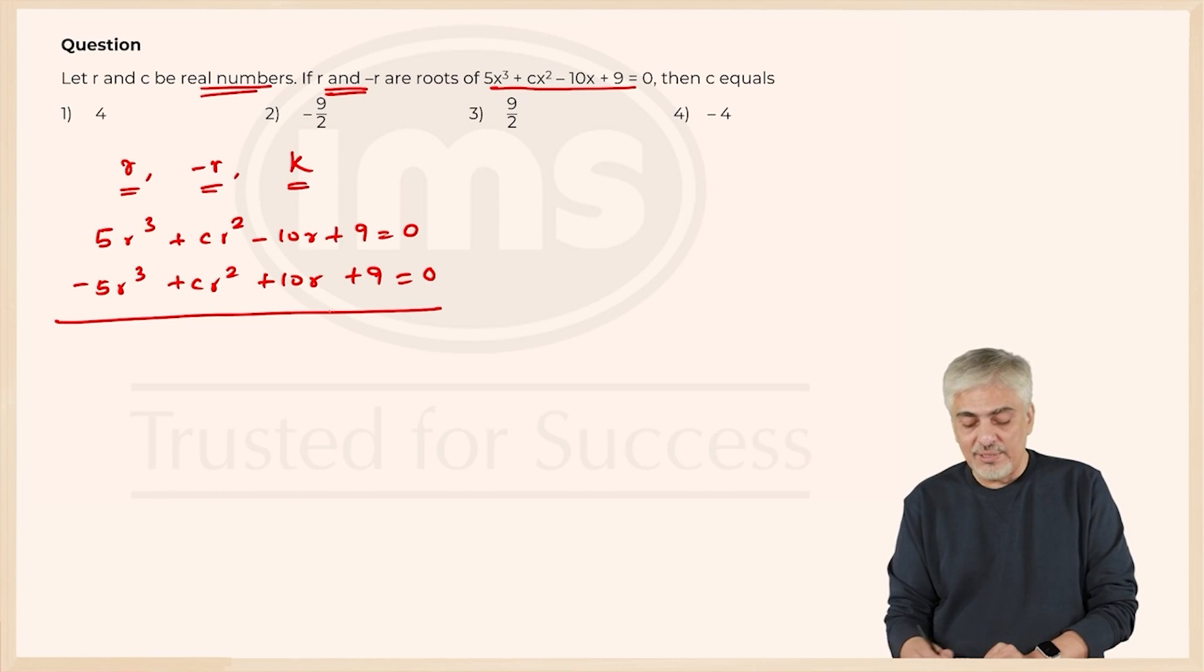So, instead of adding them, subtracted them. So, when I subtracted them, this became 10r³, this cuts out, 9 and -9 cuts out, -20r = 0.